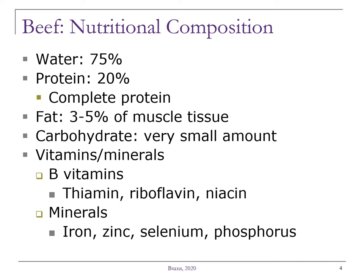Animal protein is a complete protein, meaning that it contains all of the essential amino acids. The fat can be deposited throughout the tissue — that's the marbling — and also intermuscularly, so between the muscles. Surface fat can help to retain the moisture during cooking. A certain amount of fat is desirable for the perception of juiciness, tenderness, and flavor of the meat product.